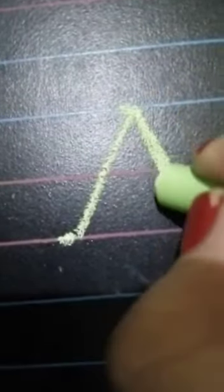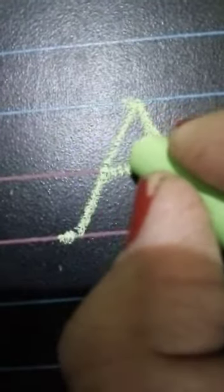Now, again we will make letter A. See, one slanting line. Again, one slanting line. And one small slipping line. See, it is very easy.